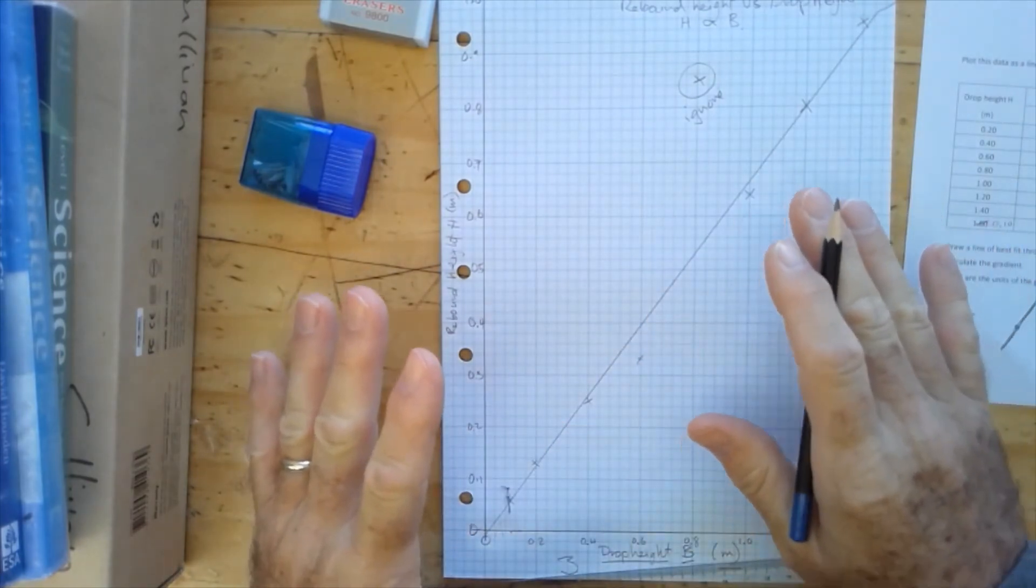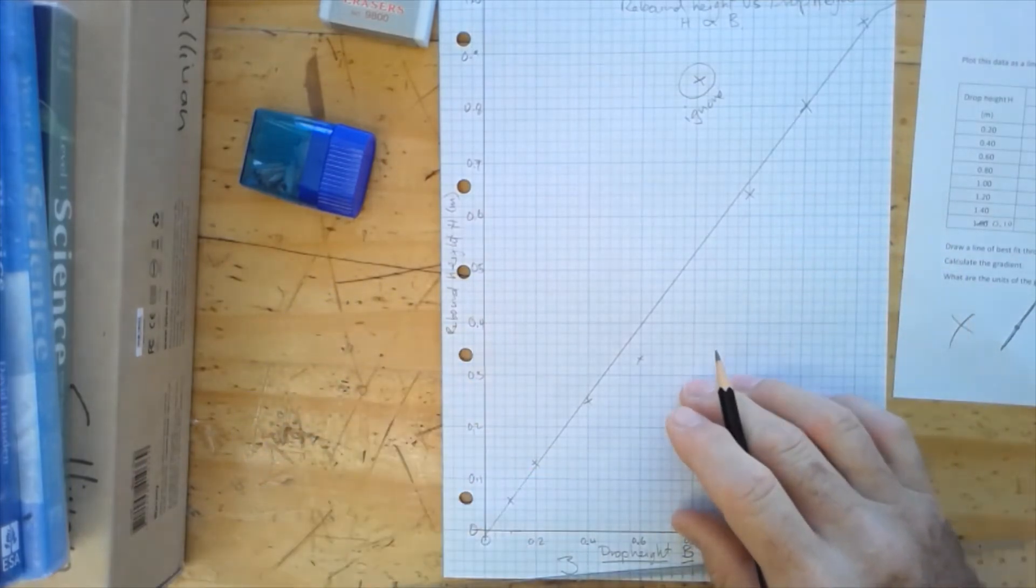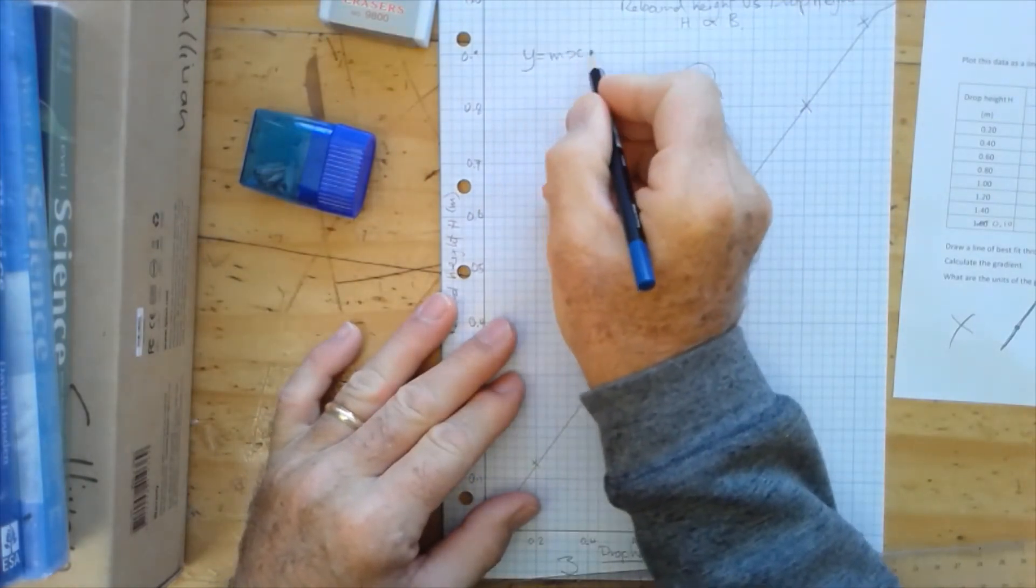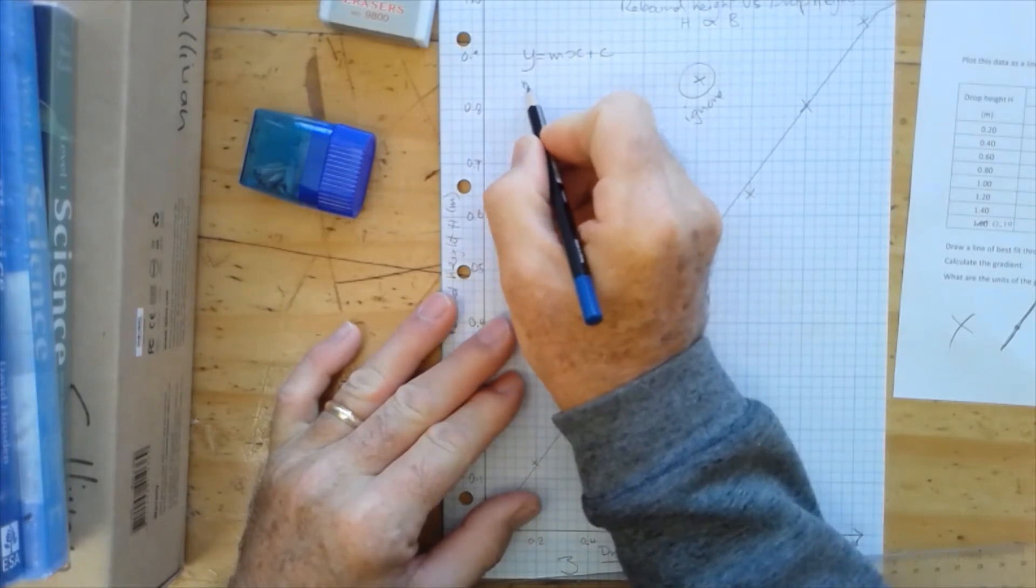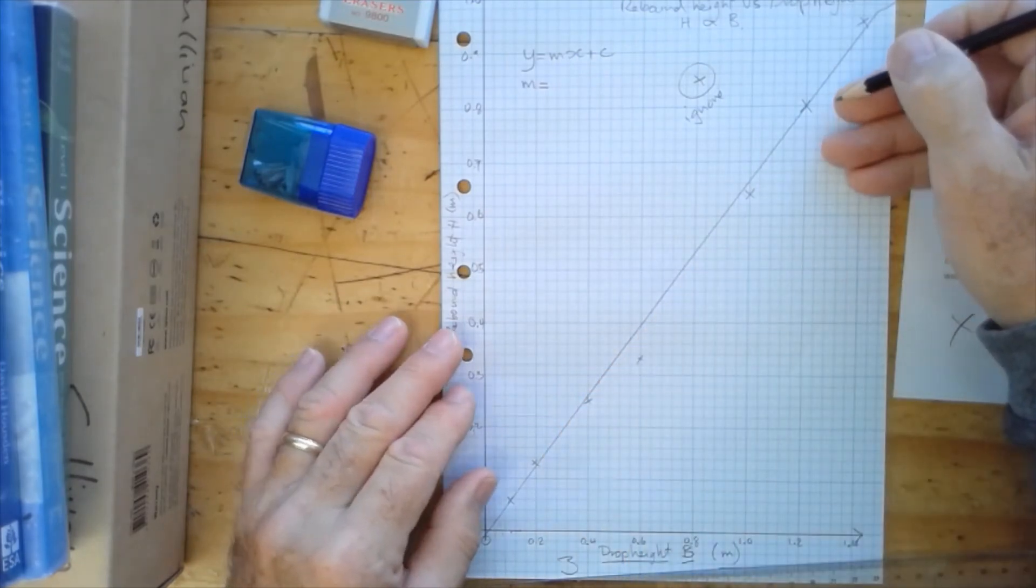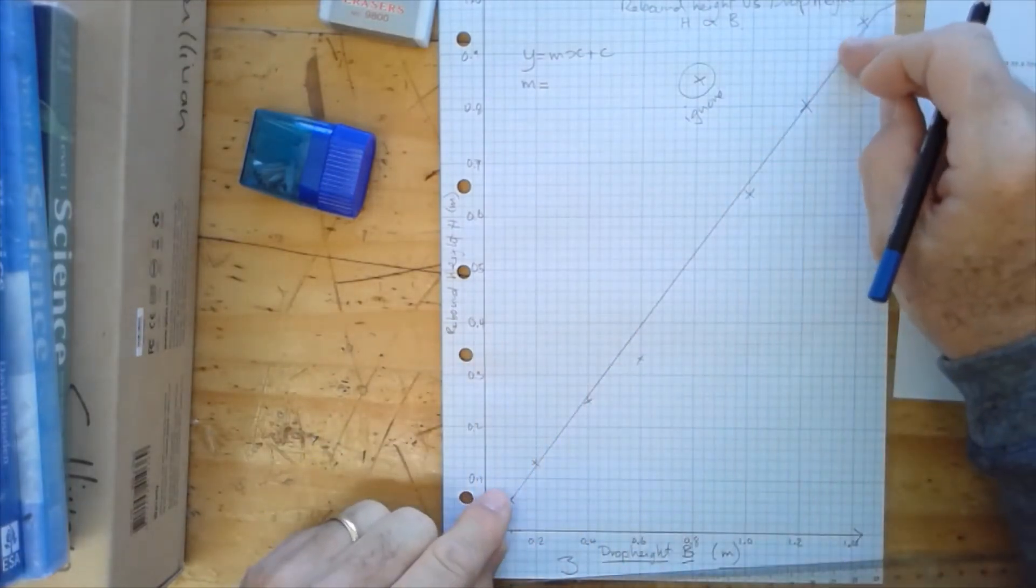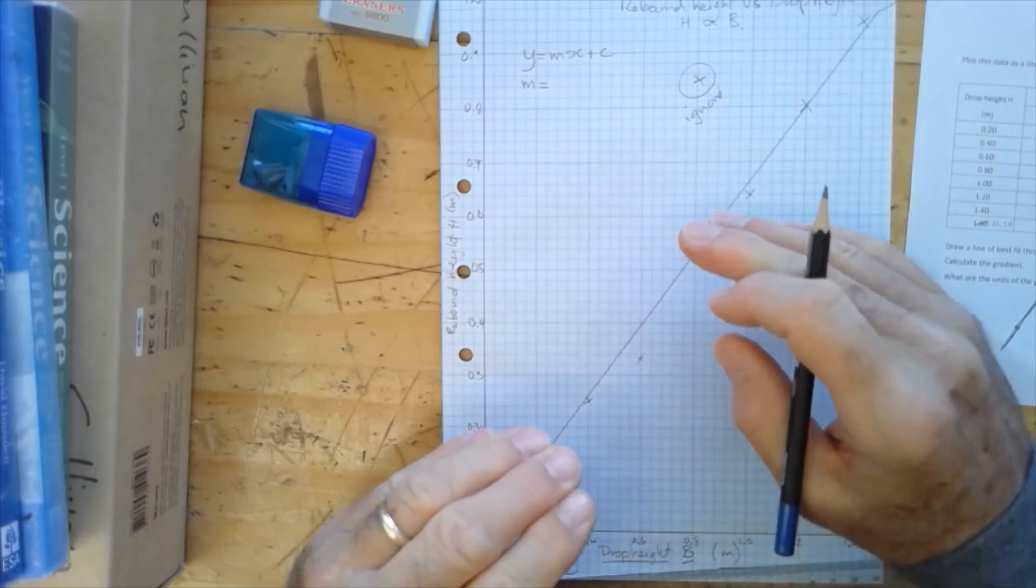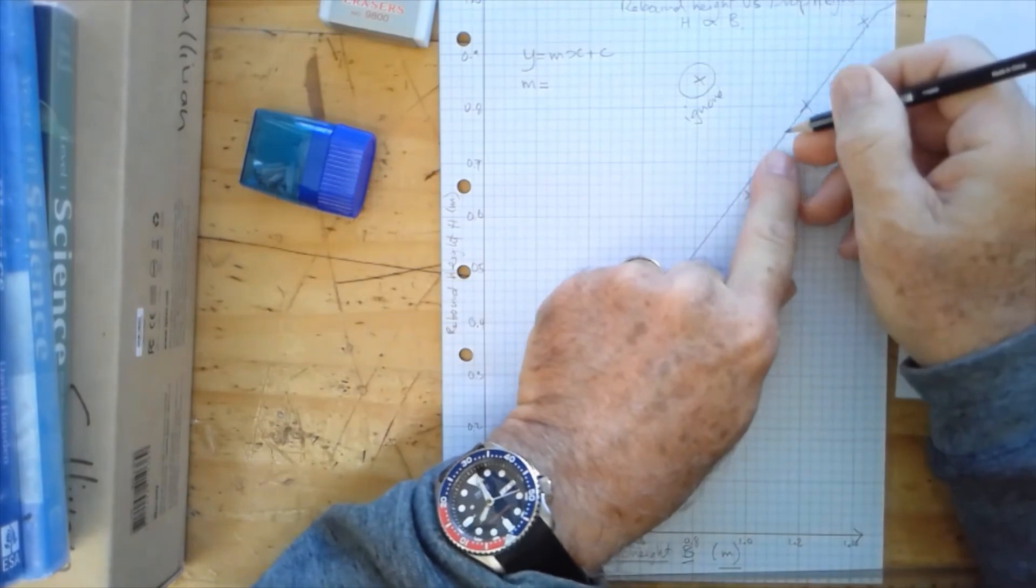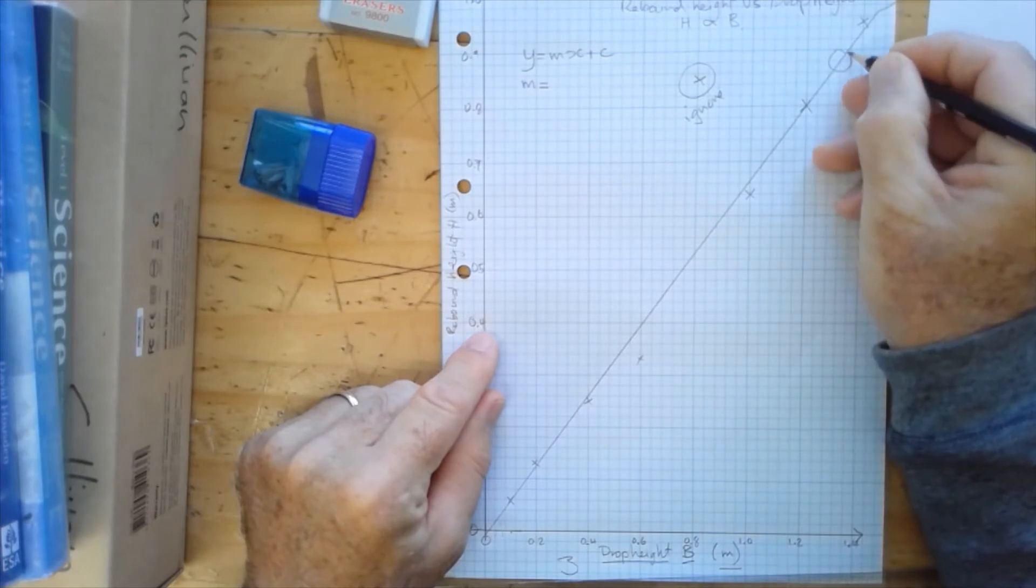Having drawn a line of best fit, now we ignore the points we've used and we're only using the line. Now what we must do now is find the equation of the line, and the way we do that as you recall, we're going to use this equation here, y equals mx plus c, where m is the gradient.